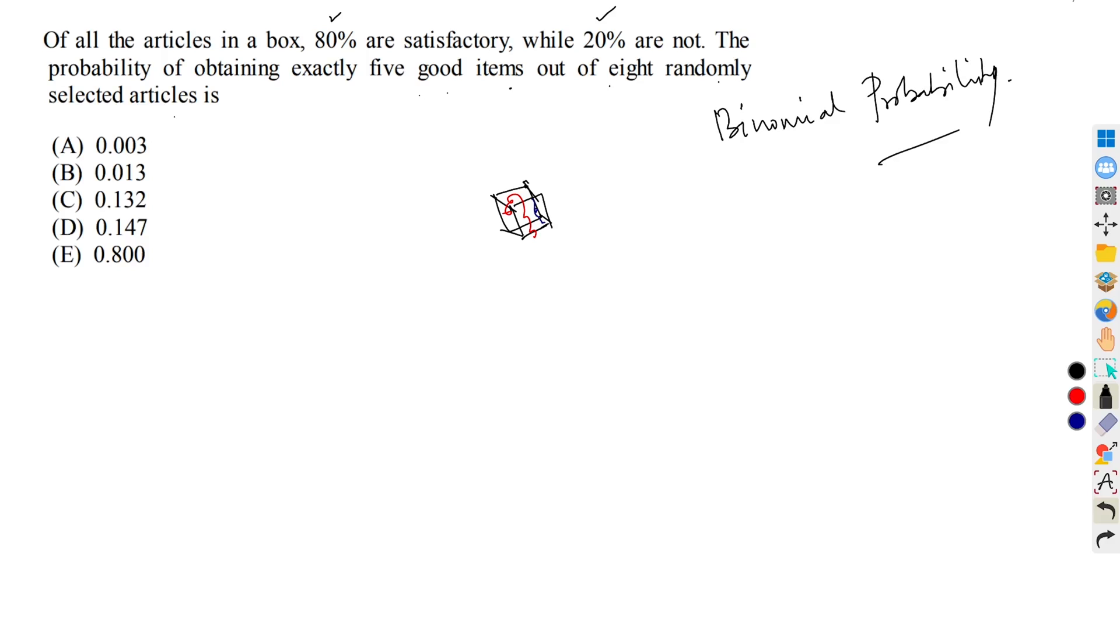As we know from the theory of binomial probability, if p is the probability of obtaining success in a single trial, then 1 minus p is the probability of failure of that single trial. And the combination here is we have to choose 5 satisfactory items from randomly chosen 8 items. This can be done in 8 choose 5 ways.